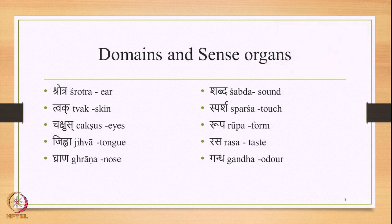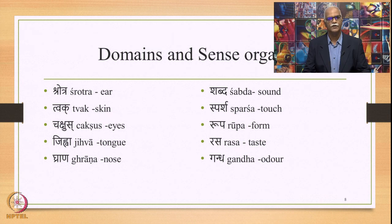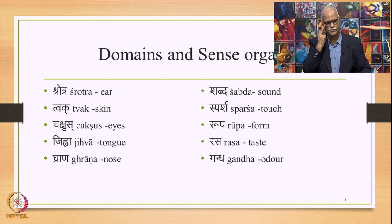To take a recap: the human cognitive apparatus is endowed with sense organs on the external side, each functioning in their respective domains. Shrutra (ear) functions in the domain of sound or shabda. Tvak (skin) functions in the domain of sparsha or touch. Chakshas (eyes) function in the domain of rupa or form. Jivha (tongue) functions in the domain of rasa or taste. Ghrana (nose) functions in the domain of gandha. There is a one-to-one relation between these domains and the sense organ.